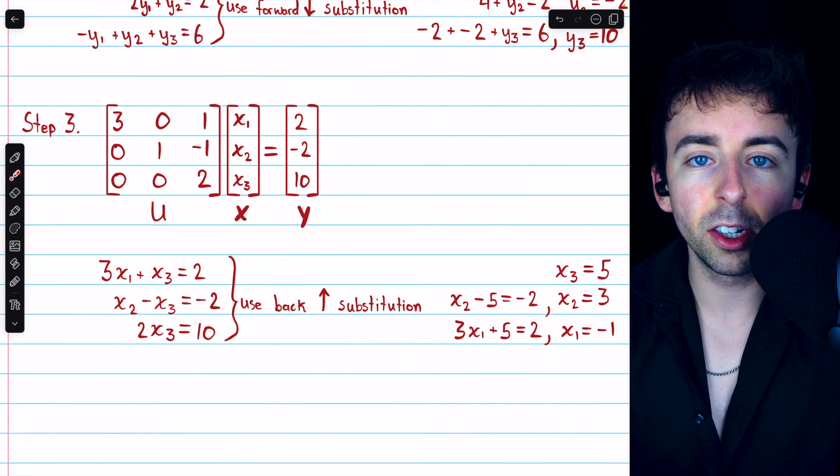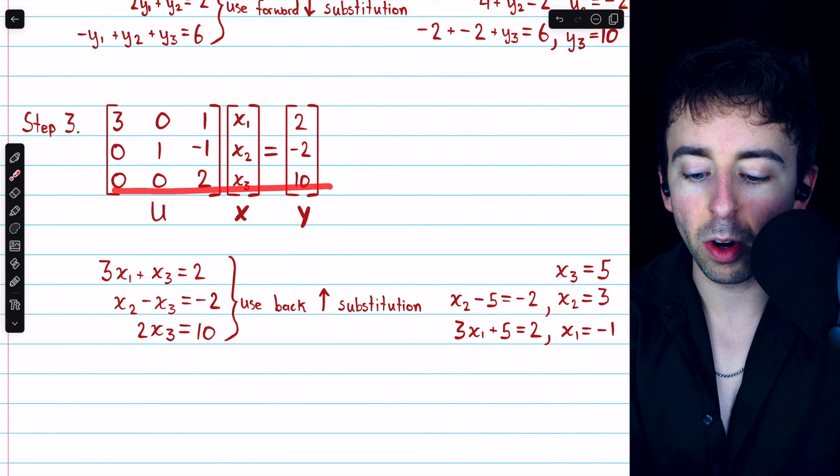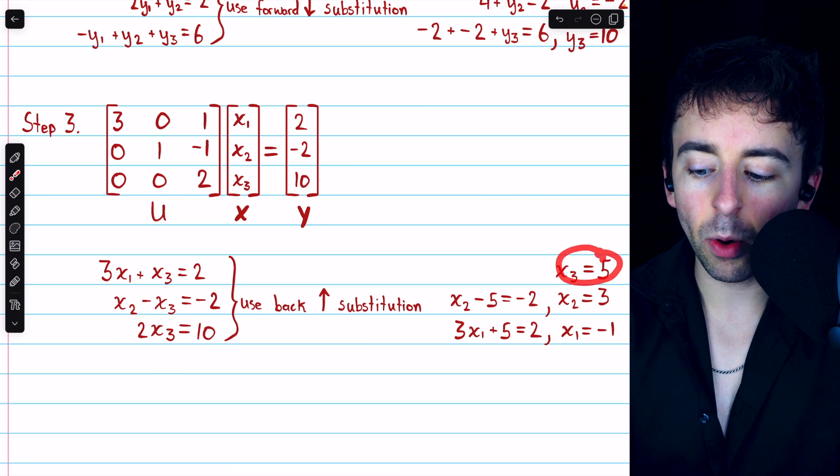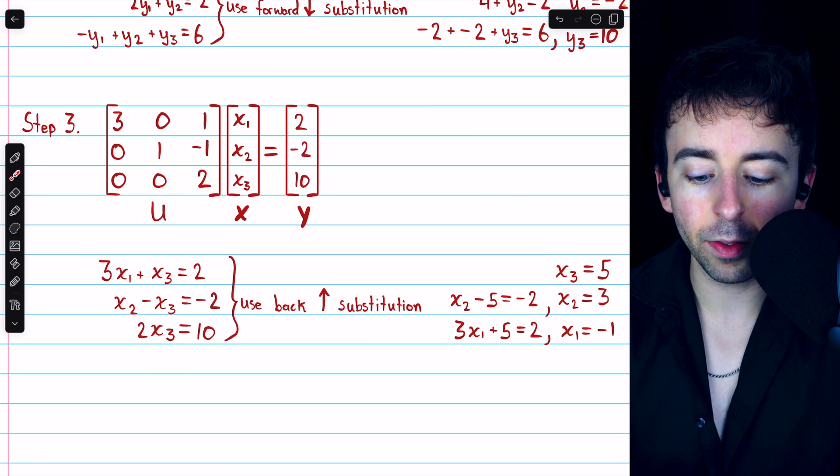It's just like forward substitution, but going the other direction. So we start from row 3, which tells us that 2X3 equals 10, and so X3 is equal to 5.